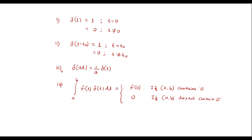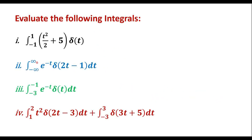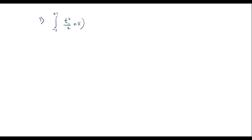One should remember all four of these properties so that we can easily solve the given numericals. Now let me consider the first integral: the integration from −1 to +1 of (t²/2 + π)·δ(t)dt.